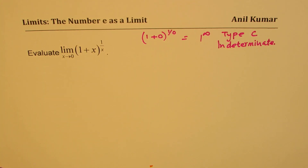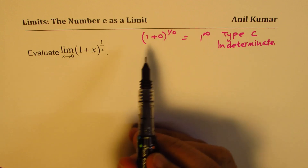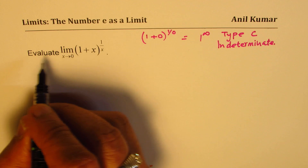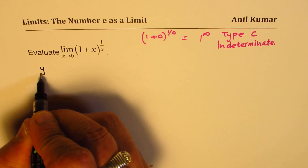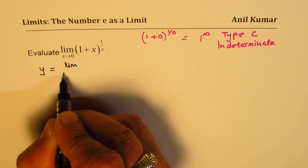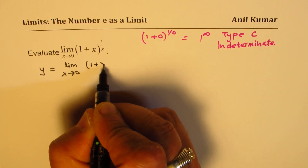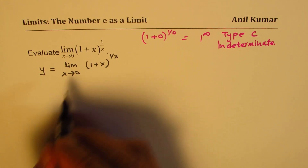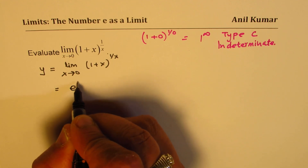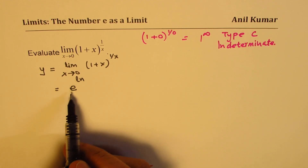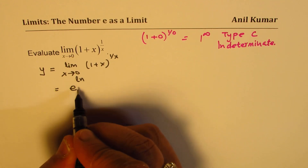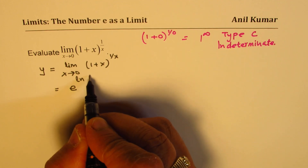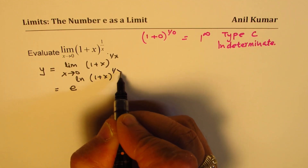To solve such kinds of limits, we need to write this in exponential form. Let y equal the limit x approaches 0 of (1 plus x) to the power of 1 over x. We could write the right-hand side as e to the power of ln of the whole function (1 plus x) to the power of 1 over x, since they are inverses of one another.